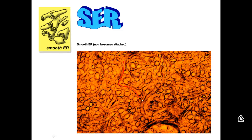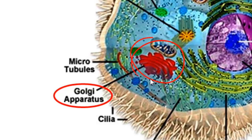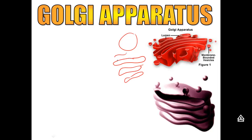Here's a picture of the smooth ER — it looks very different; there aren't any dots. Next we'll talk about the Golgi body, which we also call the Golgi apparatus. Sometimes we refer to the Golgi as flattened sacks or flattened pancakes — basically just pieces of the plasma membrane that have been flattened up. You also find vesicles very close to the Golgi body, on one side and on the other side.